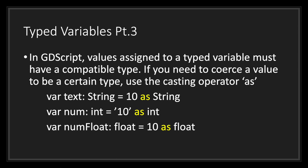If you need to coerce a value to a certain type, use the casting operator as. In the first example, we have a variable called text with a declared data type of string, and we are assigning it the value 10 as a string — this converts the integer value 10 into a string value 10. In the second example, a variable called num is assigned the string value 10 as an integer, converting it to the integer value 10. Lastly, a variable called num_float with the declared data type of float is assigned the integer value 10 as a float, converting it into a float.